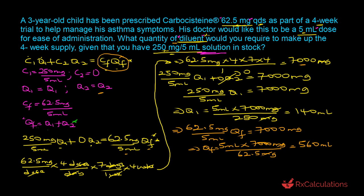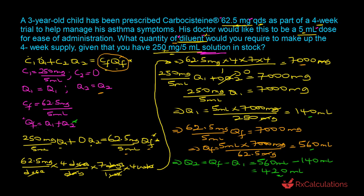Since Qf = Q1 + Q2, we make Q2 the subject: Q2 = Qf − Q1 = 560 ml − 140 ml = 420 milliliters. So 420 milliliters of diluent is required to make the four-week supply.